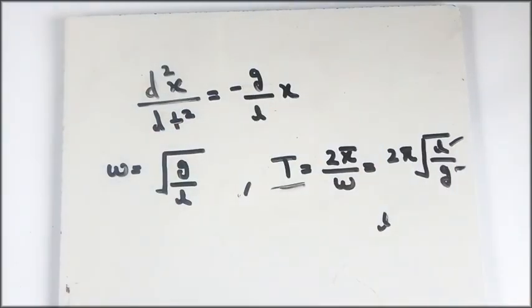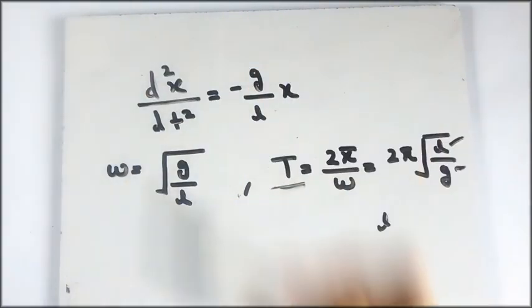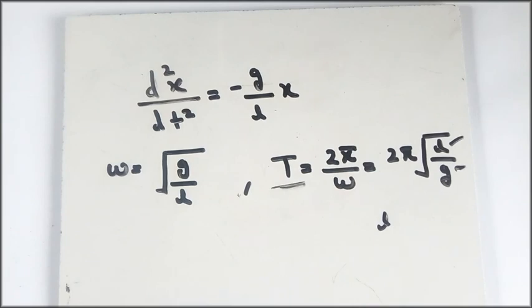This is how we derive the time period and angular frequency of oscillation for a simple pendulum, which undergoes simple harmonic motion, from its equation of motion. We have also seen that this equation resembles the equation of motion of simple harmonic motion. Thanks for watching, and always remember that math is everything.